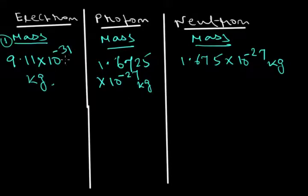Actually, this negative value, high negative power, indicates the mass is very low. The power is -31 for electron and -27 for proton and neutron. So electron is much lighter than proton and neutron. Its mass is considered as negligible.